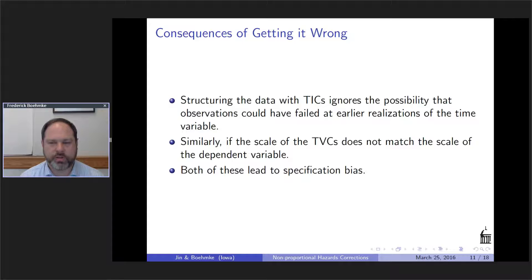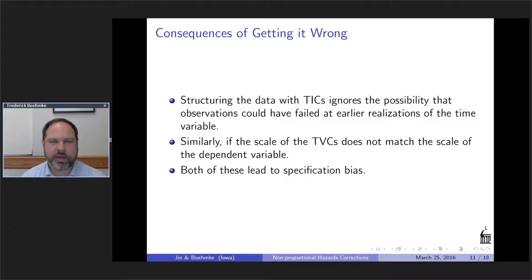The consequences of getting it wrong: if you structure the data with time-invariant covariates, you've ignored the possibility that observations could have failed before the point in time at which they do fail. Both cases lead to specification bias because you have not properly measured the value of time at all moments in which the observation can fail.